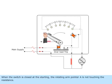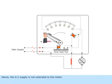When the switch is closed at the starting, the rotating arm pointer A is not touching the resistance. Hence, the DC supply is not extended to the motor.